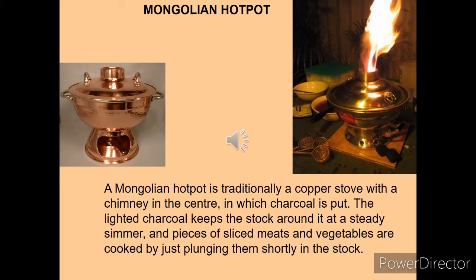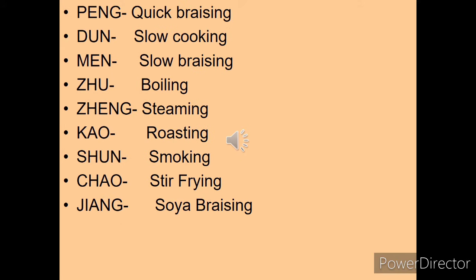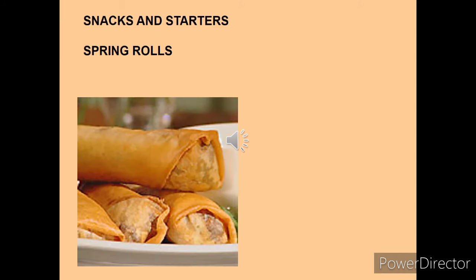Now we will talk about different types of cooking methods. Chuan means quick or rapid boiling. Shu means boiling or rinsing. Aq means stewing or braising. Hue means braising. Yan means pickling. Jian means shallow frying. Ta means pan frying. Ja means deep frying. Liu means sauté. Peng means quick braising. Dun means slow cooking. Men means slow braising. Ju means boiling. Zheng means steaming. Kao means roasting. Xun means smoking. Chao means stir frying. Jiang means soya braising. These are the cooking methods generally used for making different types of Chinese food.